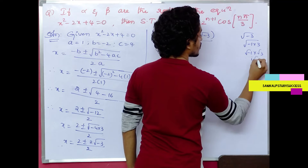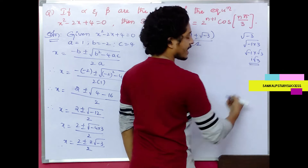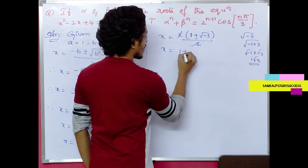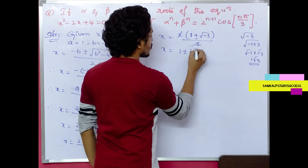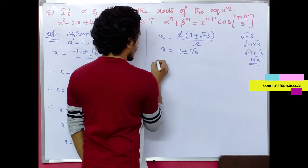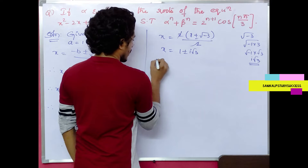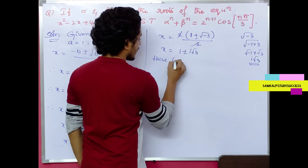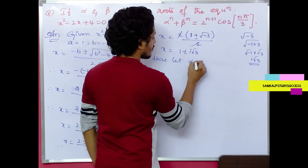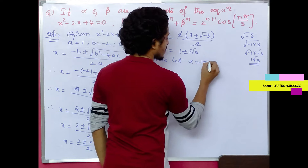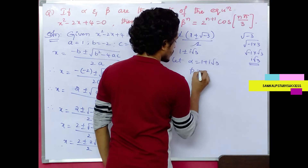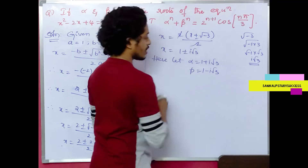That is nothing but i√3, since √(-1) = i. So the two roots are: let alpha = 1 + i√3 and beta = 1 - i√3.